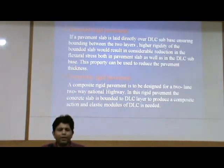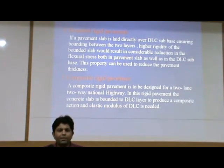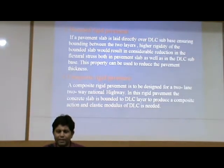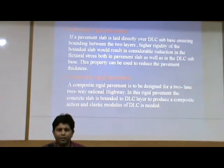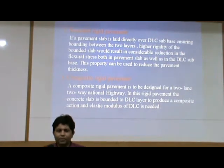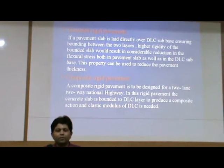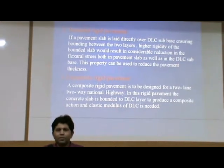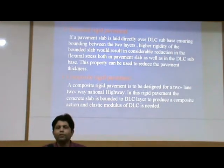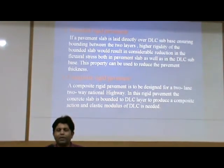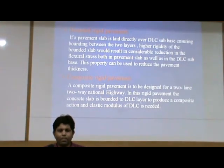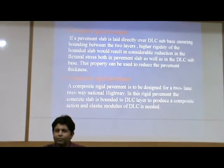Number two, bonded rigid pavements. If a pavement slab is laid directly over DLC — that is dry lean concrete — subbase, ensuring bonding between the two layers, the higher rigidity of the bonded slab would result in considerable reduction in the flexural stress, both in the pavement slab as well as in the dry lean concrete subbase. This property can be used to reduce the pavement thickness.